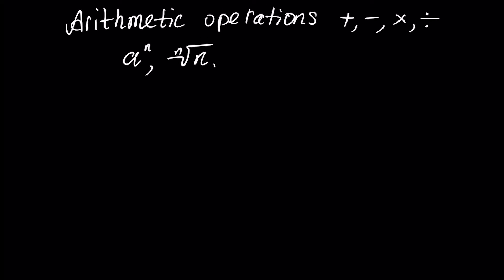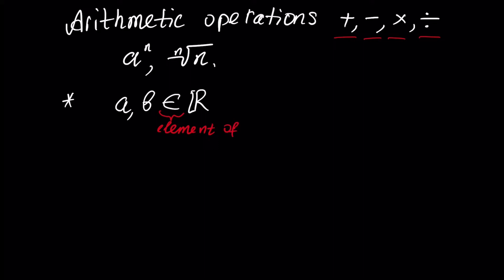Arithmetic operations — addition, subtraction, multiplication, and division — are the main operations in arithmetic. Let's denote our operation as a star, so this operation can be any of these four arithmetic operations. Assume we have two numbers, a and b, where a and b are elements of the real line, meaning a and b are real numbers. When we perform an arithmetic operation with these two numbers, the result will also be some real number c.